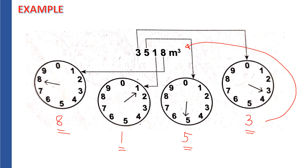Another difference to note: for the electric meter, the unit of measure used was kilowatt-hour. Now, because this is a water meter, the unit we use is cubic meters.